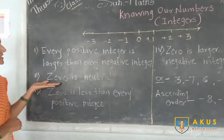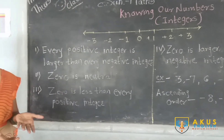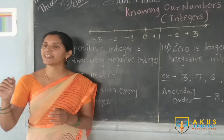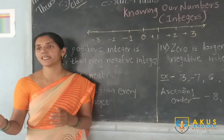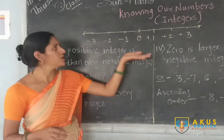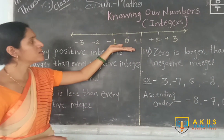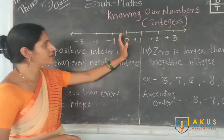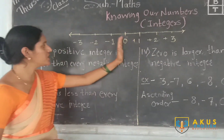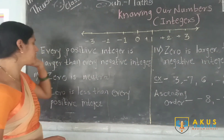Then 0 is neutral. What do we mean by neutral? It is neither positive nor negative. So 0 is a neutral number — it is neither a positive integer nor a negative integer.